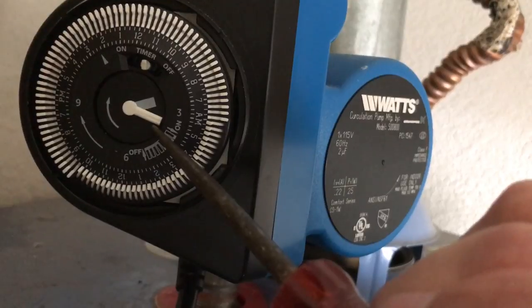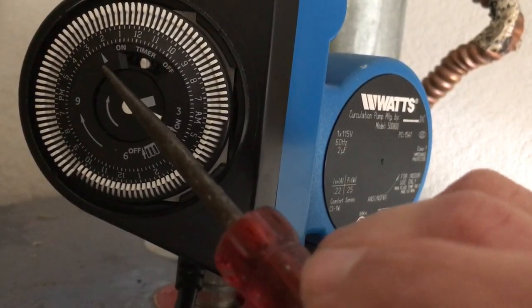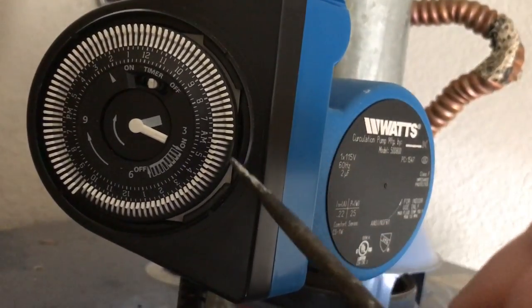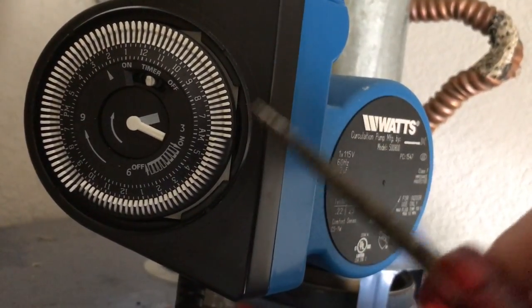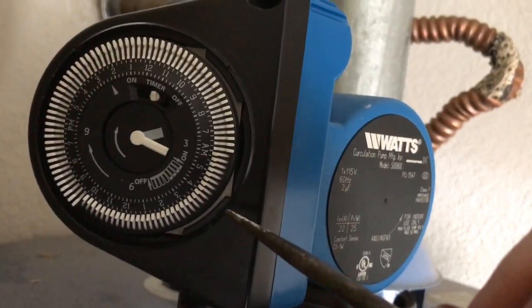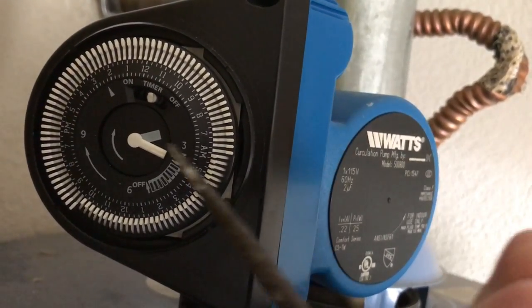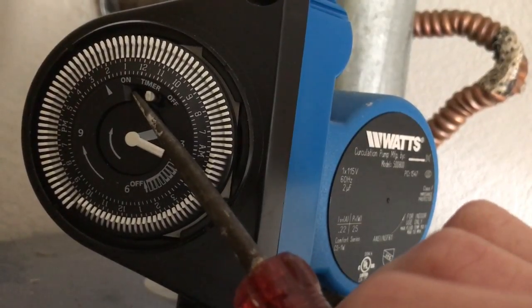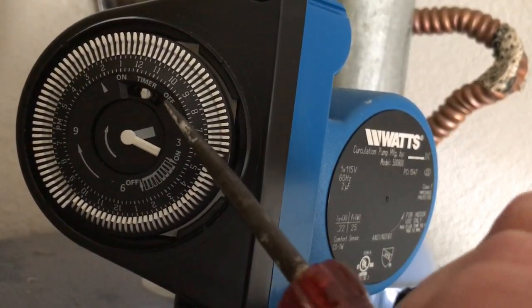So we set the current time. Right now it's 2:30 PM. Looks like we're good. All right, the next step is to set the on or off operating hours of the unit. Now there are a couple ways you can do this. Up here we've got three selections: we have on, we have timer, and we have off.